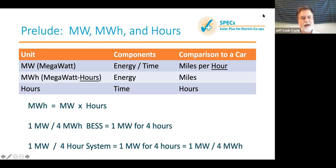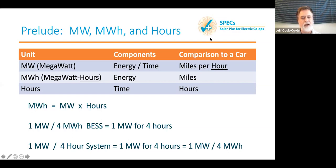Four megawatt hours is the amount of energy in the system — it means you could run one megawatt for four hours. That phrase 'megawatt hour' is hard to say, so oftentimes we talk more in terms of a one megawatt, four-hour system, meaning you could discharge for four hours — same as a one megawatt, four megawatt hour system. Even I get tripped up sometimes saying megawatts when I mean megawatt hours, so I just wanted to address that up front.